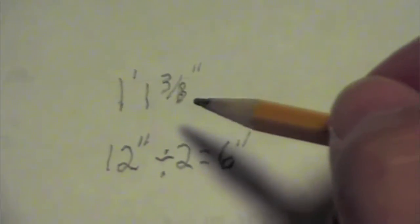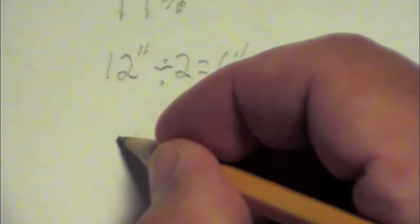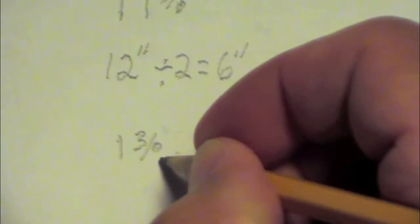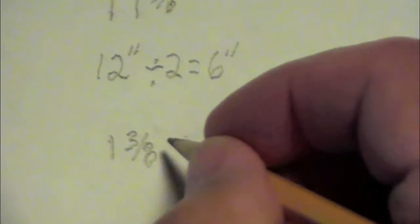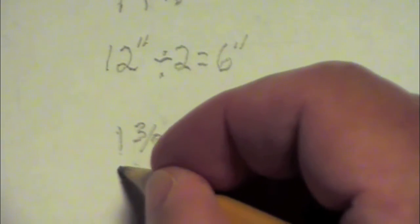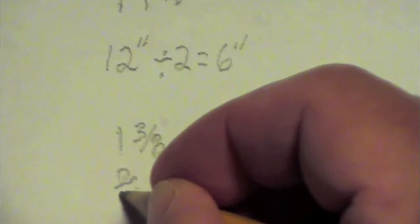Now we need to take care of the one and three-eighths part. One and three-eighths. How many eighths in the one? Well, there would be eight eighths. Eight over eight.